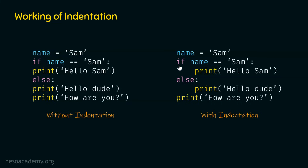Reading the corrected code: if name is equal to Sam, then print hello Sam; otherwise print hello dude. But the 'how are you' statement must be printed no matter what — it is not part of either the if or else statement. So if name equals Sam, hello Sam is printed, then how are you. Otherwise, hello dude is printed, then how are you. I hope this concept and how indentation works in Python is now clear.